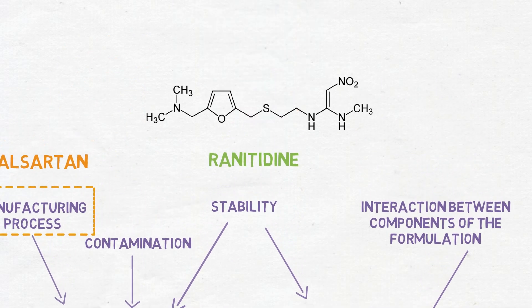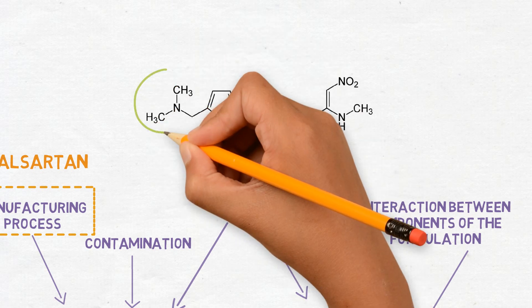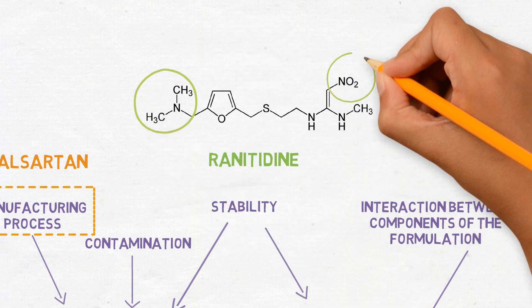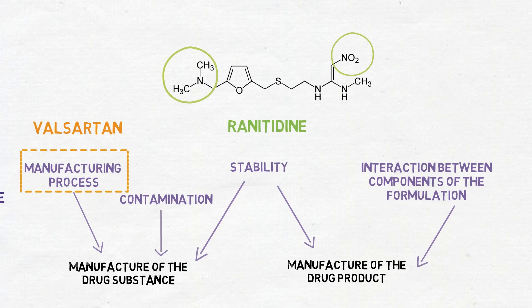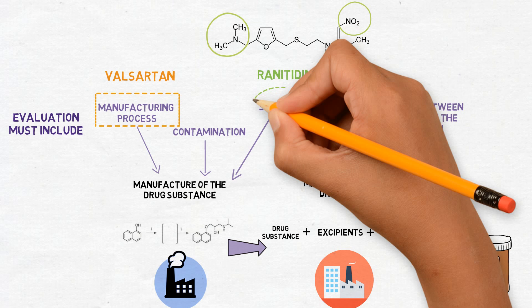For Ranitidine, on the other side, the precursors were part of the drug substance molecule itself, so that the nitrosamine was formed through the degradation of the Ranitidine molecule, so this was a stability issue.